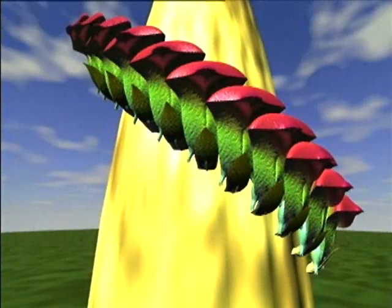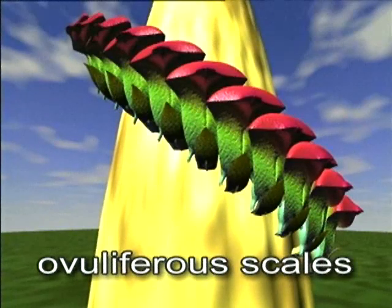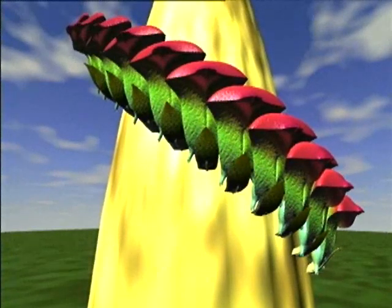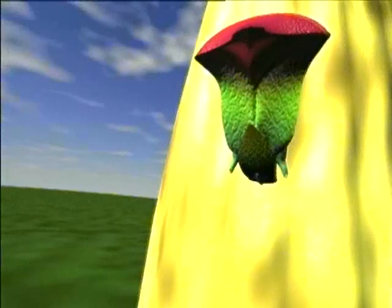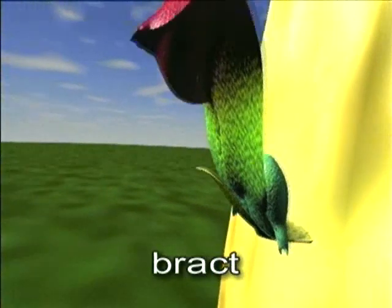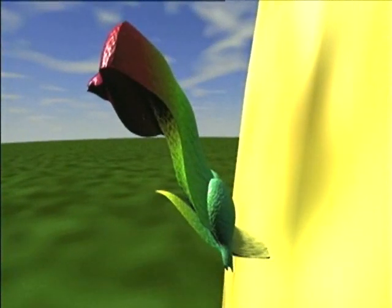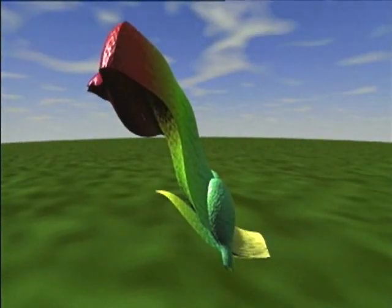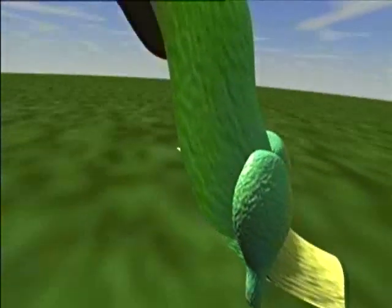The intact ovulate cone consists of numerous spirally arranged ovuliferous scales. Each ovuliferous scale has a small bract fused to its lower surface. The upper surface contains two ovules.